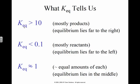So when K is larger than 10, we say that the equilibrium favors the right-hand side, the product side. When K is smaller than 0.1, that means that equilibrium favors the left-hand side, the reactant side. When K is around one, we're pretty much at equilibrium; lies right in the middle.